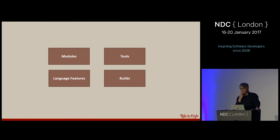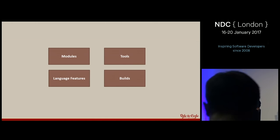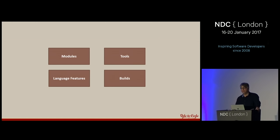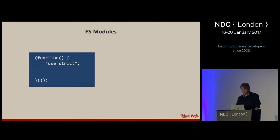I basically broke things down into a few different areas. Number one: modules. When the ECMAScript 2015 specification came out, there was a lot of excitement about arrow functions and class definitions, but it was really modules and the ECMAScript 2015 module definition that had the most significant impact on our code, our architecture, and how we build large applications. I also want to talk about language features, current tooling, and the build process.